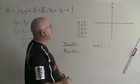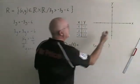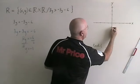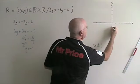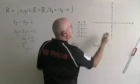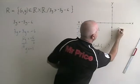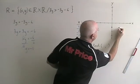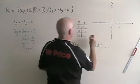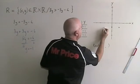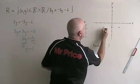Next, I graph these points. The point (0, -1) is here, (2, -1) is here, and (-2, -1) is here.